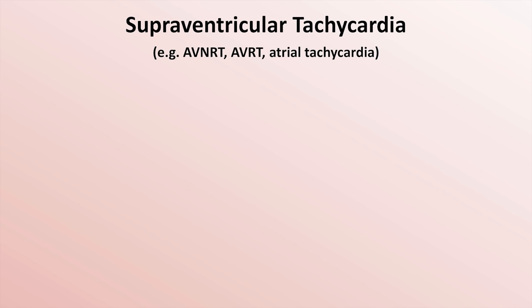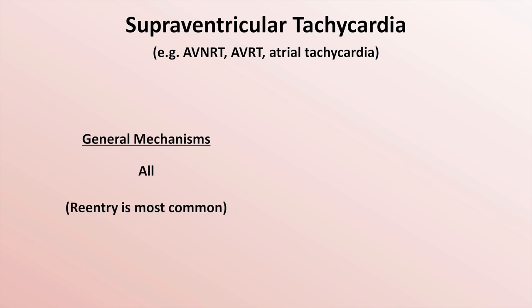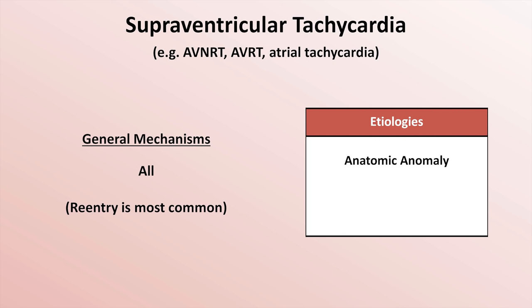Since SVTs are a diverse group, they can invoke any mechanism of arrhythmogenesis, though reentry is the most common overall. The etiology of the vast majority of SVTs is an anatomic anomaly — either a reentrant circuit or a tiny island of hyperexcitable tissue in the atria. A small fraction of cases of atrial tachycardia specifically can be caused by digoxin toxicity.